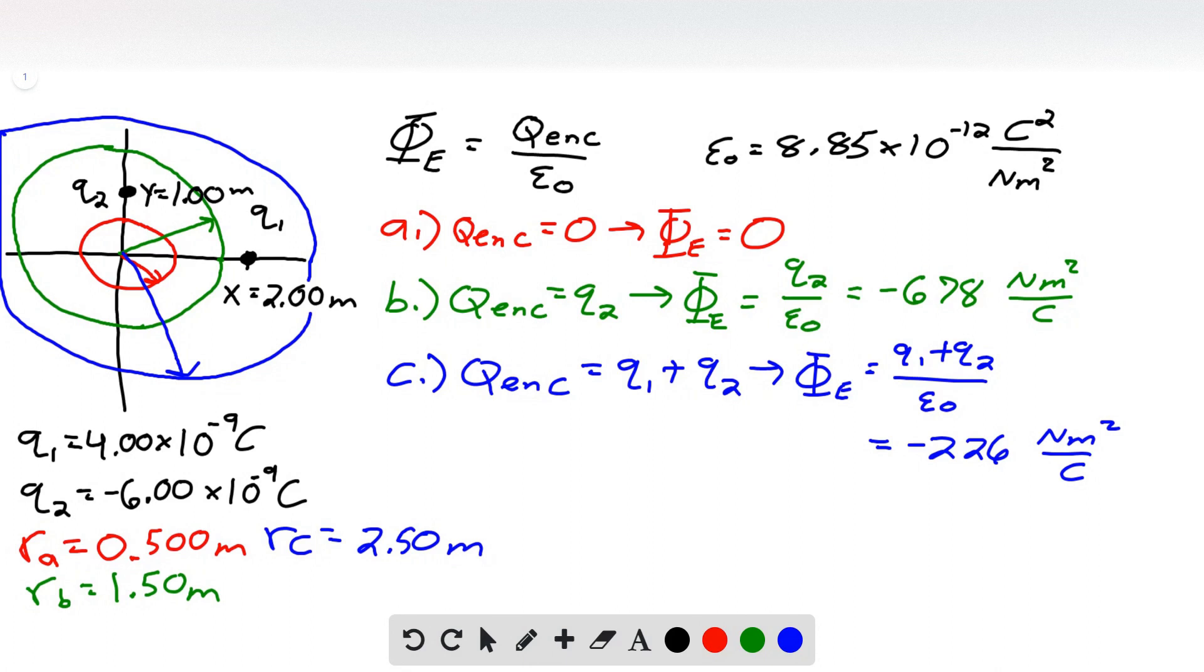The very first thing that I have done is I have made a sketch of the x and y-axis. So at x equals 2 meters, going along the x-axis, that's where our charge Q1 is located. And going up along the y-axis, y equals 1.00 meters is where our Q2 is located. And then I've drawn out the three parts that we're looking for. So first we have a sphere of radius 0.500 meters coming out from the origin. We have this red circle.